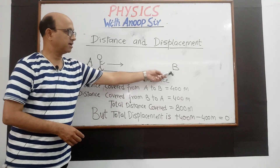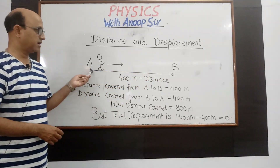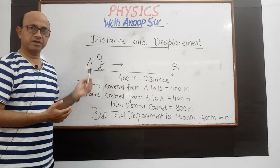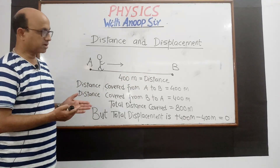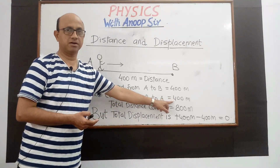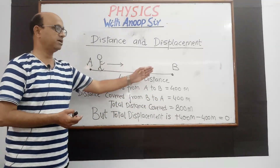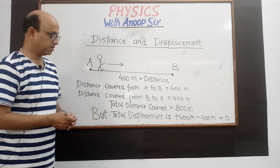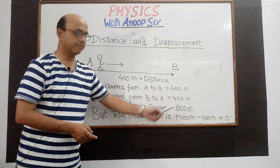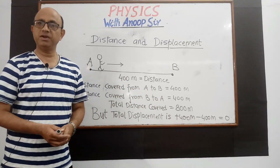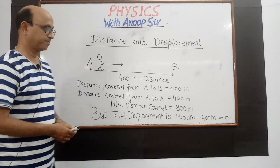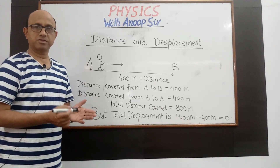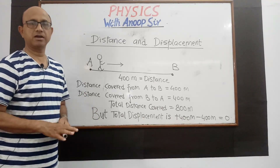Now this person moves again and comes back to position A. Again he is covering the distance of 400 meters, because the distance between A and B is 400 meters. So if we calculate total distance, we add both and get 800 meters.